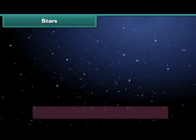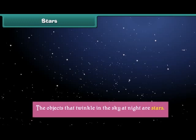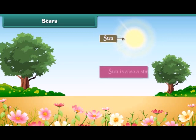Stars: The objects that twinkle in the sky at night are stars. They are natural objects which emit their own light. The sun is also a star.